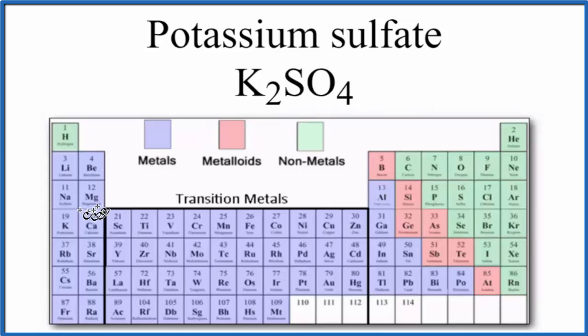If we find potassium on the periodic table right here, we see that it's a metal. And then sulfur and oxygen, here's sulfur and here's oxygen, those are nonmetals. When we have a metal plus nonmetals, it's almost always going to be an ionic bond.